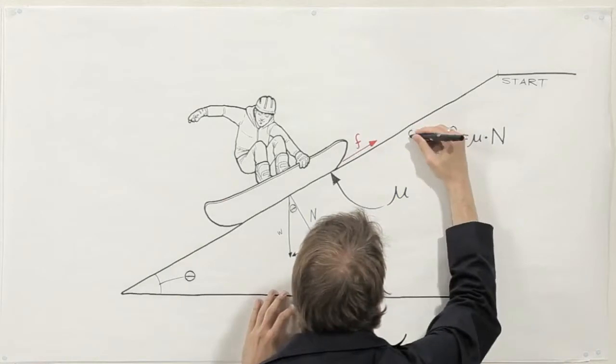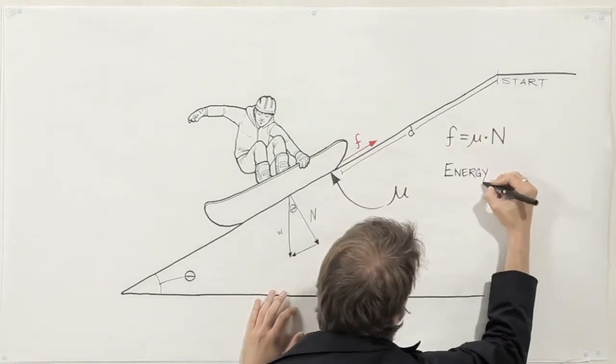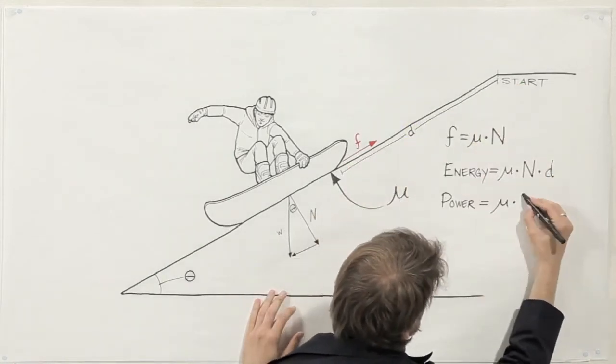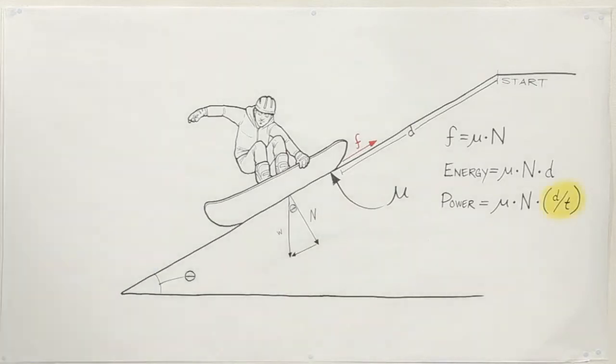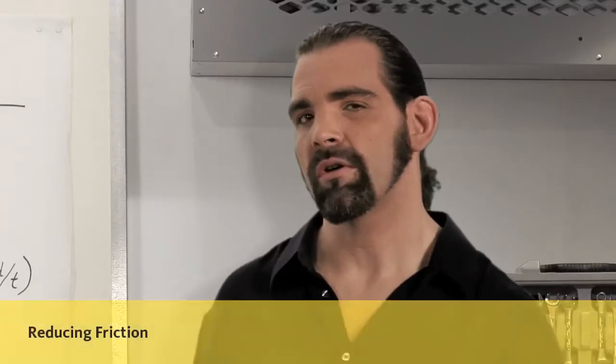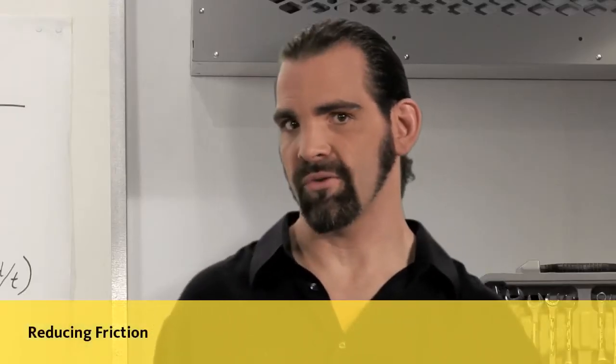To find the energy used to overcome friction, multiply friction force by distance. To find out power loss, multiply friction force times velocity. Once we know where friction comes from, we can reduce it.